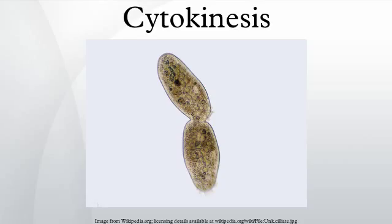The final stages include recycling of excess membrane and other material from the cell plate, and fusion with the parental cell wall. The phragmoplast is assembled from the remnants of the mitotic spindle and serves as a track for the trafficking of vesicles to the phragmoplast mid-zone. These vesicles contain lipids, proteins, and carbohydrates needed for the formation of a new cell boundary. Electron tomographic studies have identified the Golgi apparatus as the source of these vesicles, but other studies have suggested that they contain endocytosed material as well.